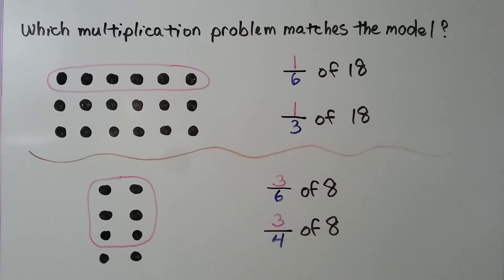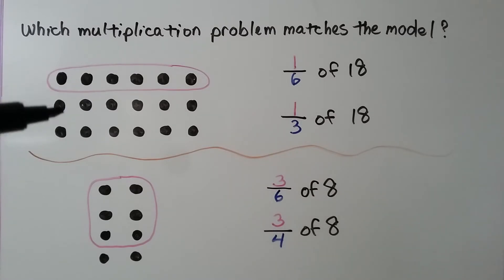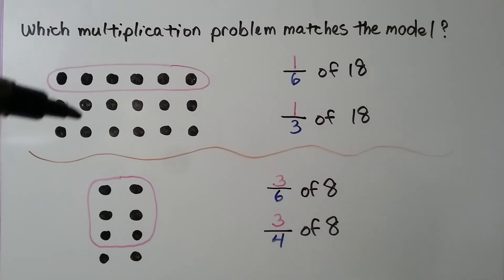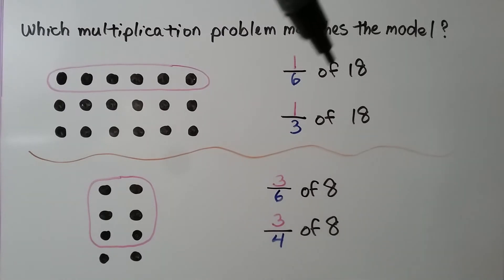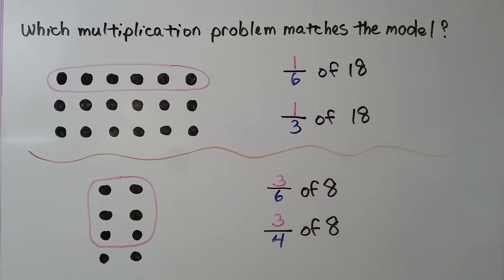We need to find which multiplication problem matches the model. We have one group circled. We can see there are three rows, and one of the three rows is circled. There are six times three — eighteen counters. So it's of eighteen, and one of three rows is circled. If you said one-third of eighteen, you're right.